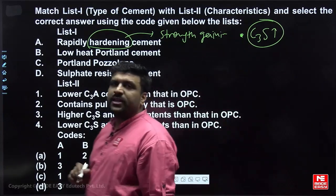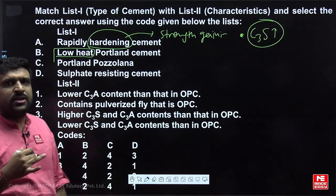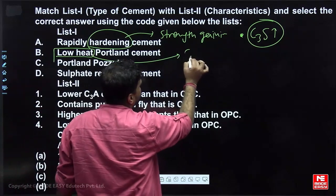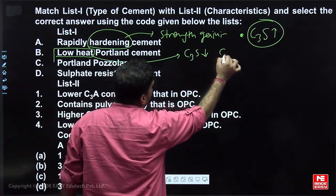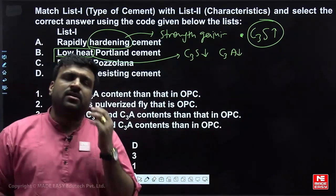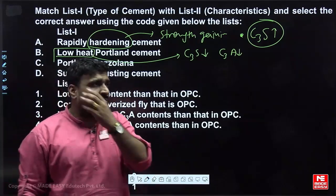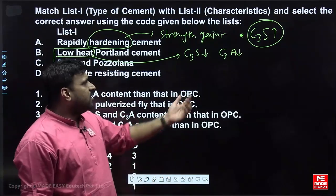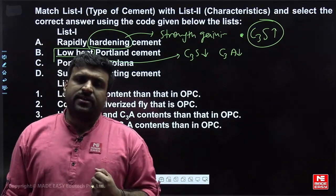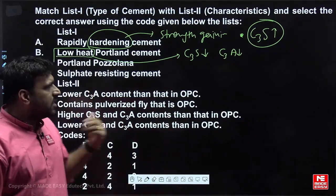Next is low heat Portland cement, which means we have to prepare a cement that releases a lesser amount of heat. If you want lesser heat, we have to decrease the content of C3S and C3A. C3S releases approximately 105 calories per gram over 90 days, and C3A releases 310 calories per gram over 90 days. Both are very heavy heat-producing compounds, so they have to be reduced.